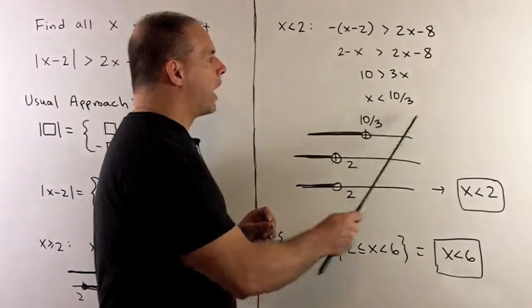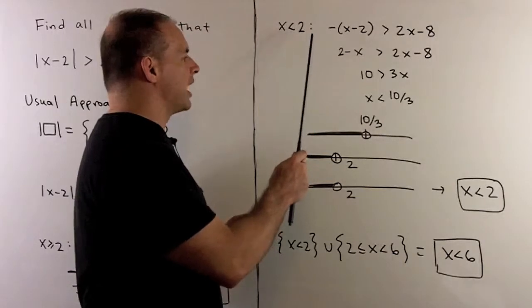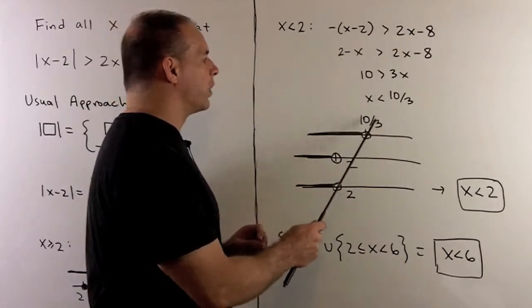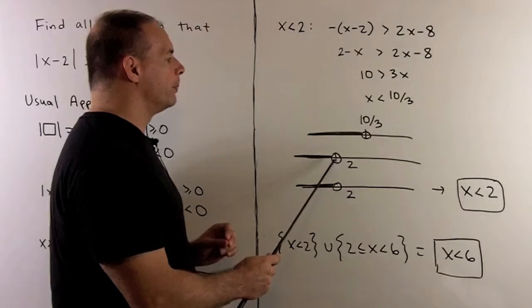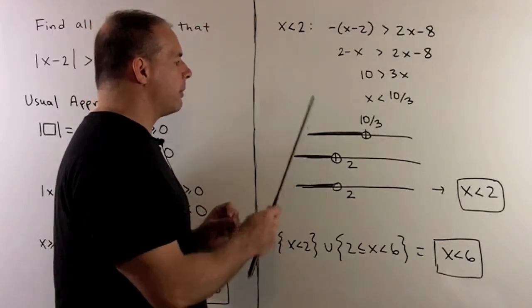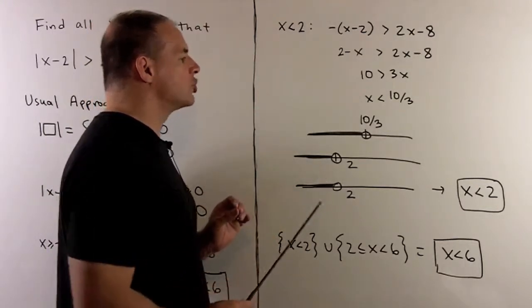We consider where both our inequalities are true at the same time. If x less than 3 and a third, x less than 2, to consider all points that are common to both regions, we'll have x strictly less than 2.